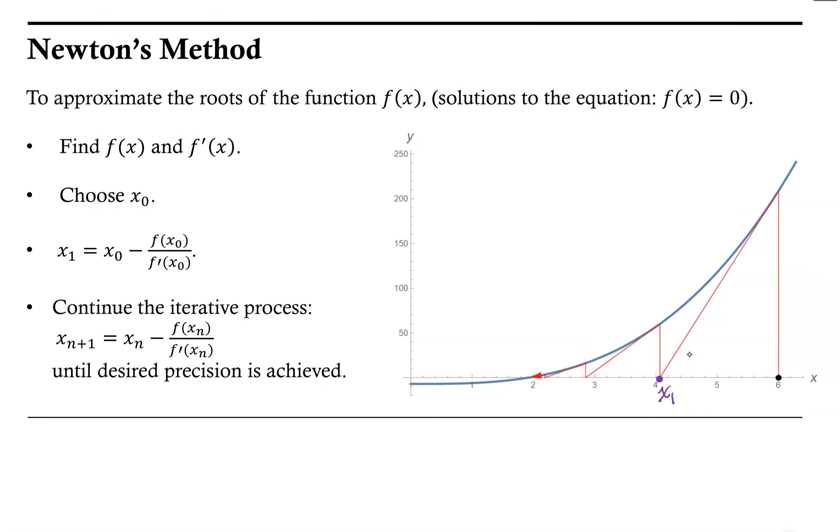Recall that Newton's method required knowledge of both the function and its derivative, that we need to have some sort of initial guess, an x-naught, that might be provided or you may need to make that guess.